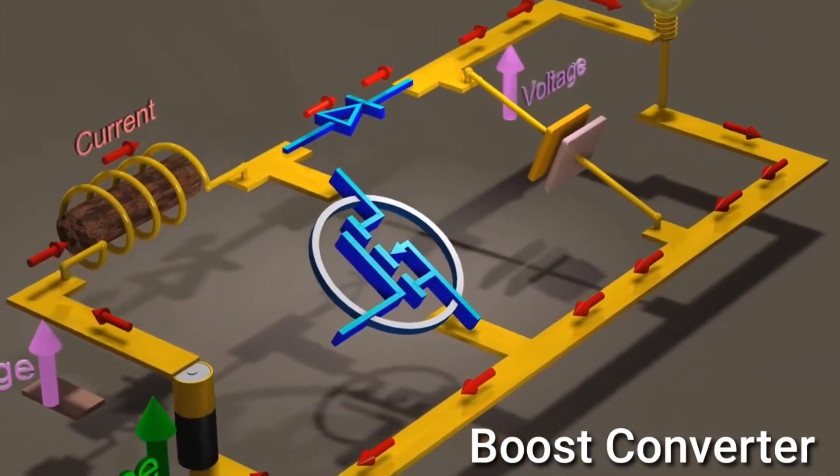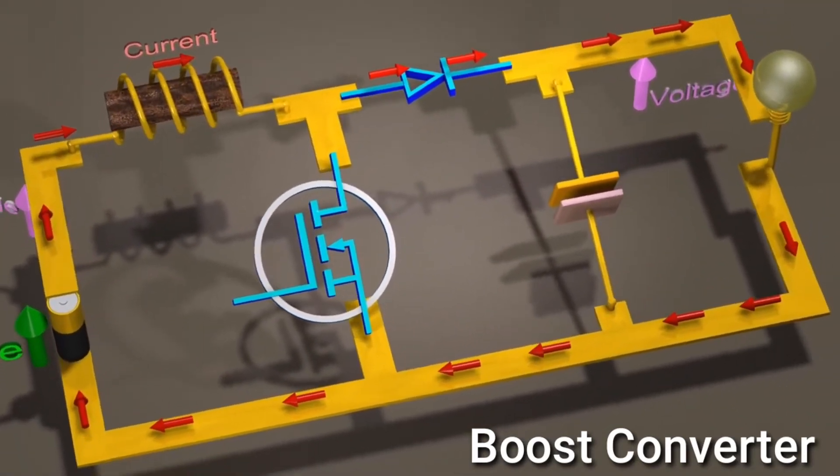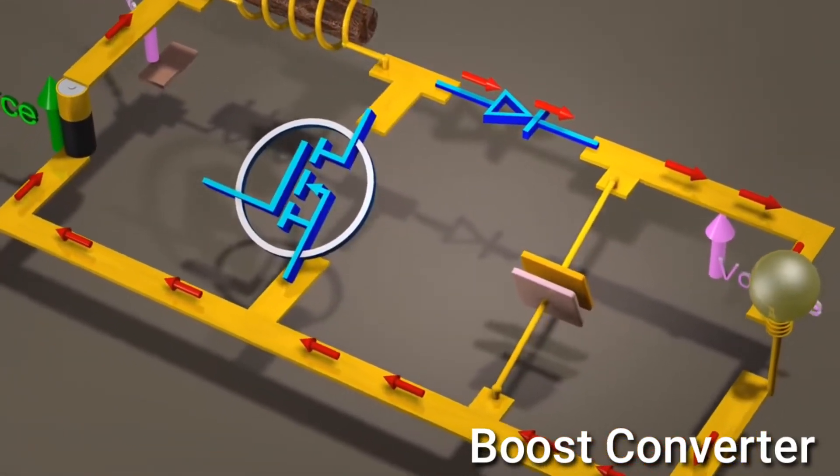Suppose we want to increase the voltage of our only battery. We have an inductor, a transistor, a diode, and a capacitor.